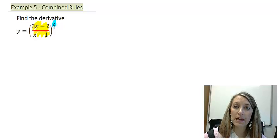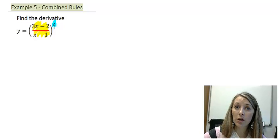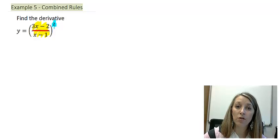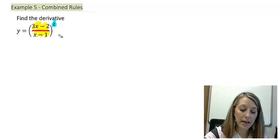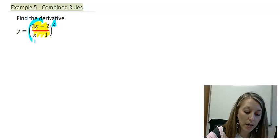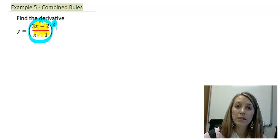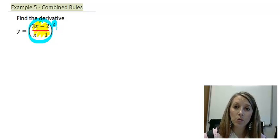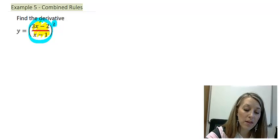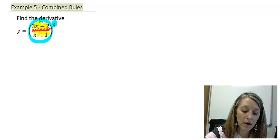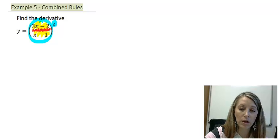My explanation is: if you have one inside piece and one outside piece, you need to start with a chain rule. If you have two separate pieces, then you need to start with whatever rule is appropriate. In this case, I have one inside piece and one outside piece, so I need to do my chain rule first, and then in taking the derivative of my chain rule, that's where I need to bring the quotient rule in.